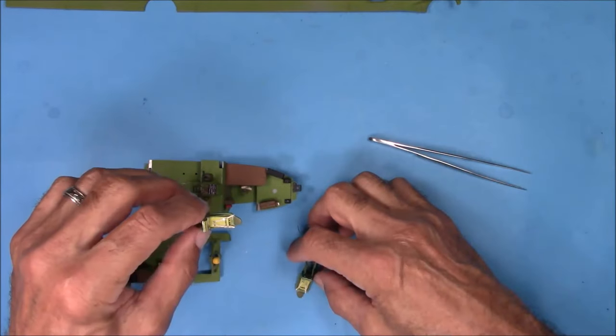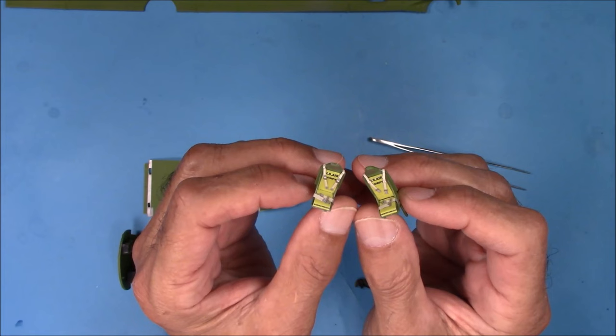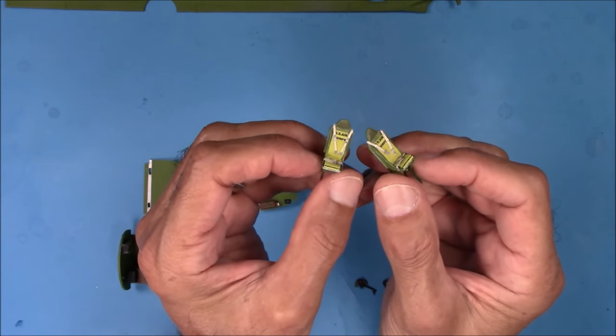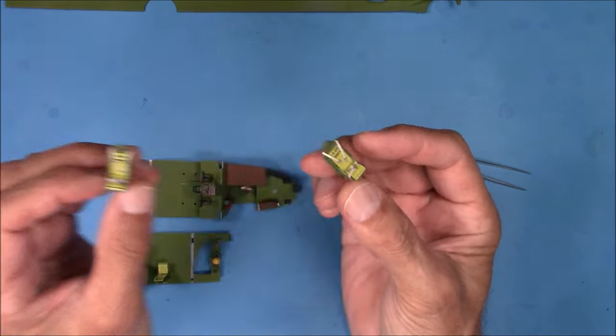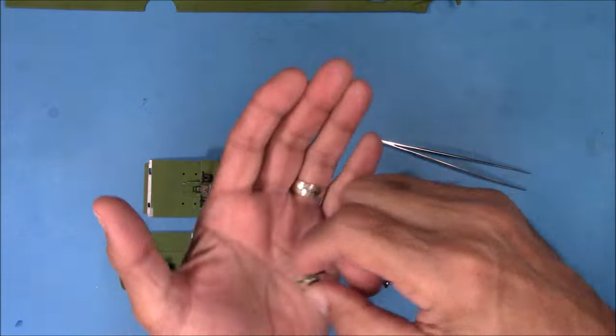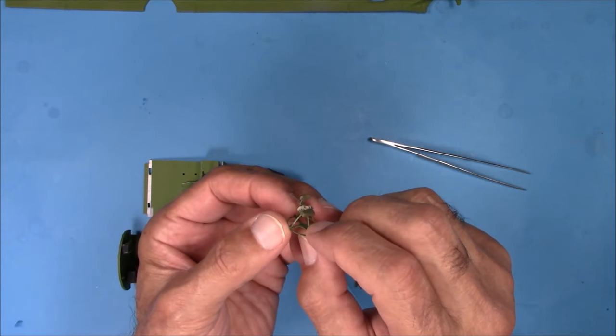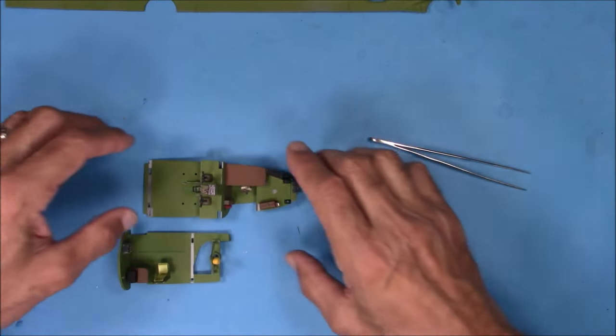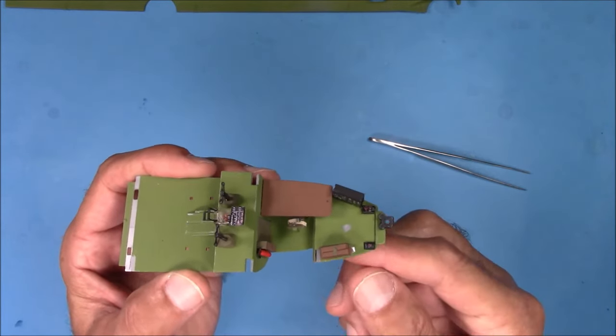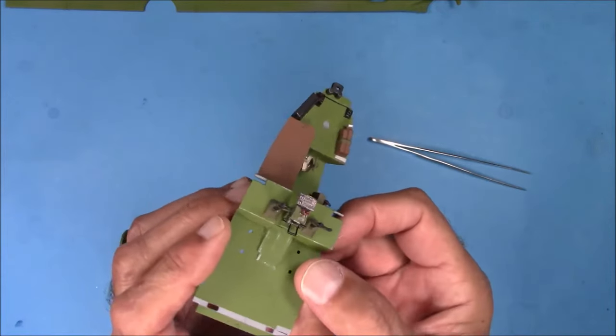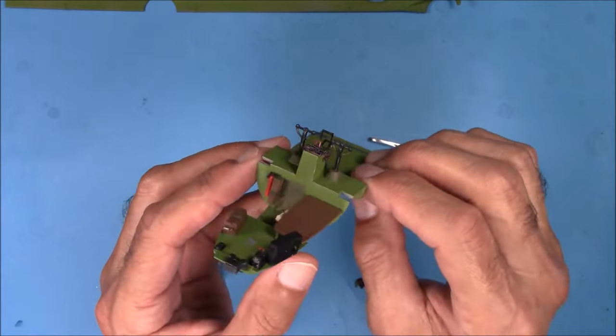The pilot and co-pilot seats came out really good. There are Eduard pre-painted seatbelts, and they're really set off the cockpit area. This is the bombardier's chair.